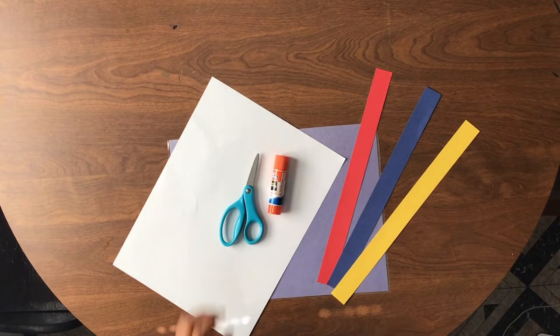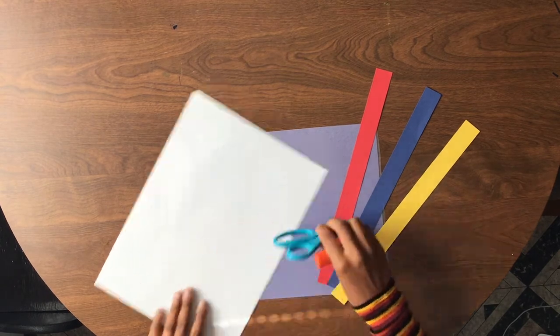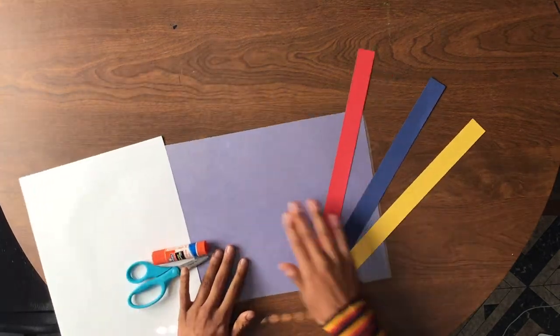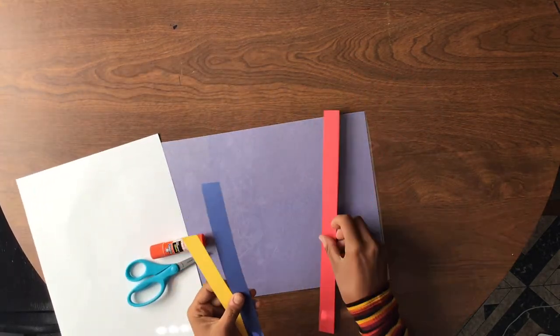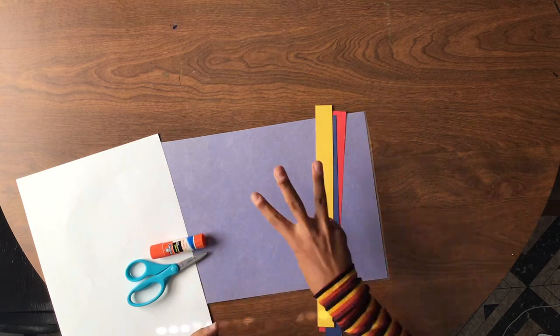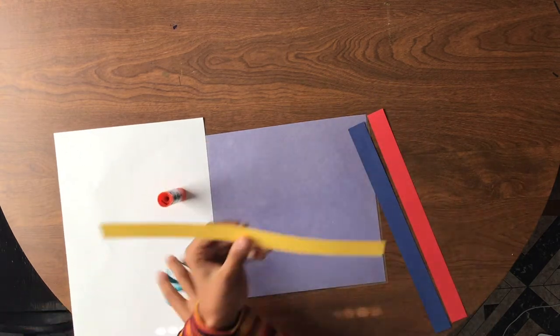For this step of the project, you'll need scissors, a glue stick, a white piece of paper, your messy mat for gluing, and three strips: one red, one blue, one yellow. The three primary colors.